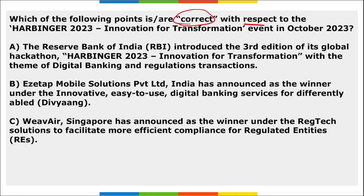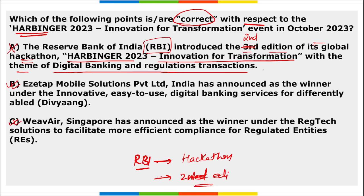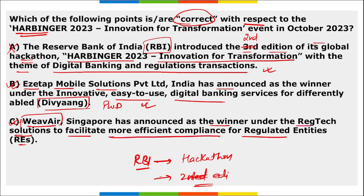Next: which among the following are correct with respect to Harbinger? This is a hackathon conducted by RBI. This was the second edition of the global hackathon held in 2023. Option B and C are correct, but A is wrong because A says this was the third edition — it is actually the second edition. The theme was 'digital banking and regulation transactions.' EasyTap Mobile Solution of India was announced as winner under innovative digital banking services for Divyangjan, and VVR of Singapore won under RegTech solutions for regulated entities.